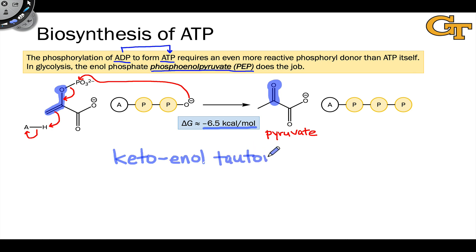We're going from the less stable enol form in the enol phosphate to the much more stable keto form, and that's thermodynamically downhill. It's downhill enough to power the formation of ATP on the product side from ADP.